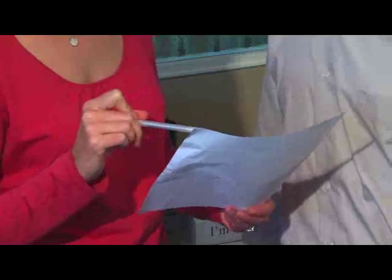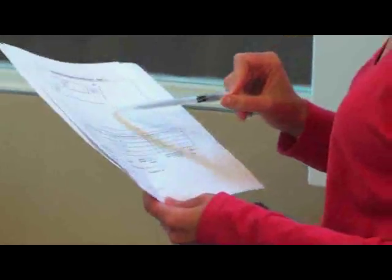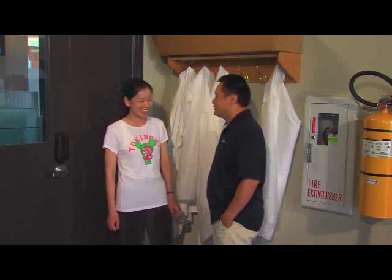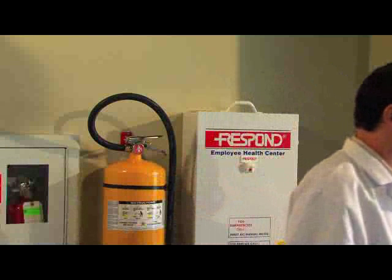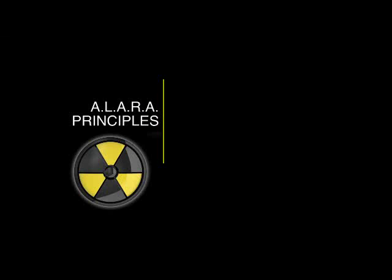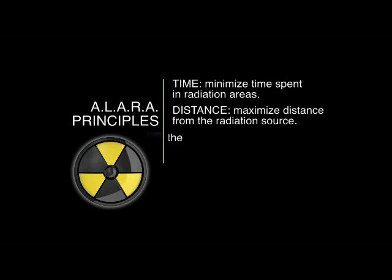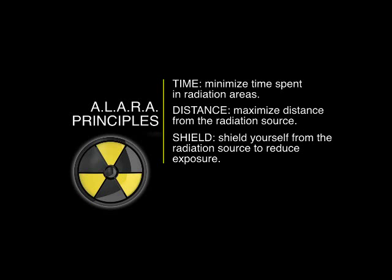The person responsible for the area can give you this information. Radiation and contamination surveys are performed routinely in radiological areas and are well documented. The person in charge is also responsible for familiarizing all workers with these surveys so everyone can be aware of their own safety. Radiation areas are not places to hang out. To minimize your exposure, never loiter in high radiation areas. This will help maintain a dose as low as reasonably achievable, called ALARA. The basic ALARA principles are: minimize your time in the radiation area, maximize your distance from the radiation source, and shield yourself from the radiation source to reduce exposure.